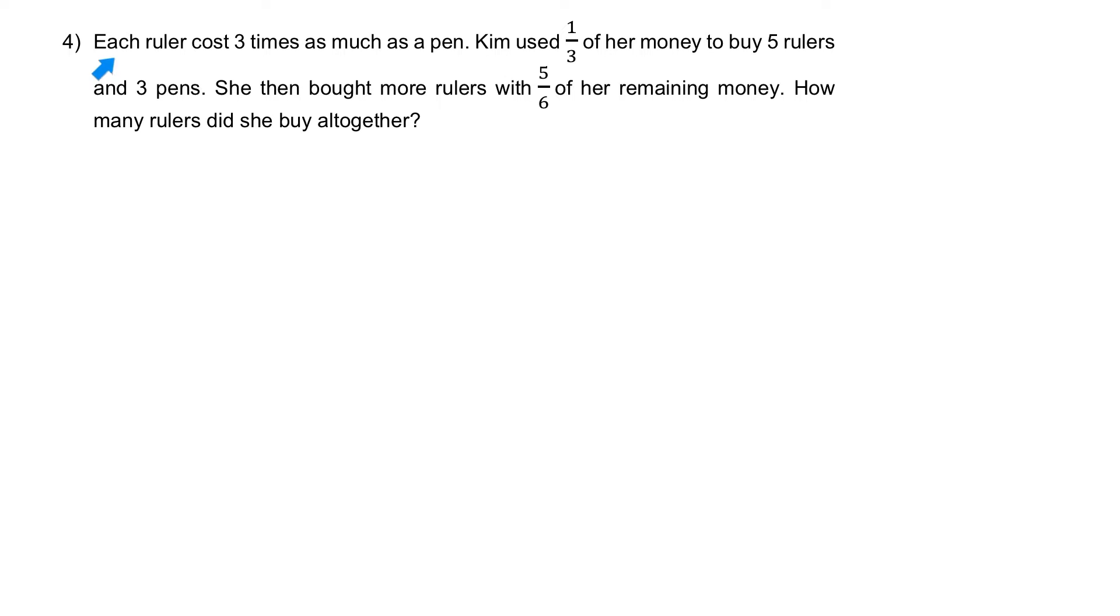Question 4: Each ruler cost three times as much as a pen. Kim used a third of her money to buy five rulers and three pens. She then bought more rulers with five-sixths of her remaining money. How many rulers did she buy altogether?